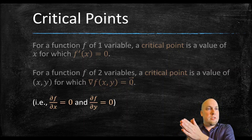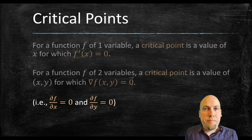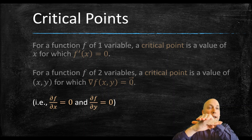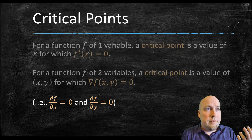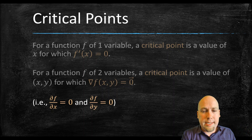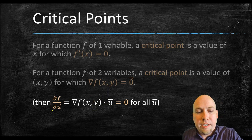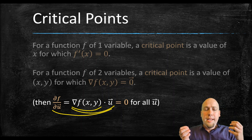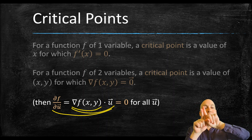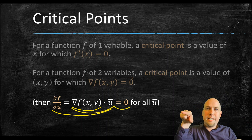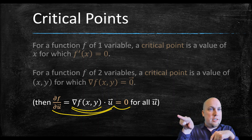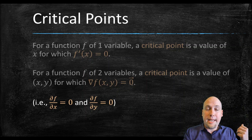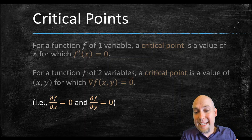In other words, we need the x partial derivative to equal zero and the y partial derivative to equal zero. Geometrically, this means the graph is flat and horizontal in the x direction and also flat or horizontal in the y direction. Importantly, if you think about directional derivatives — every directional derivative is just the gradient dotted with the direction vector. If the gradient equals zero, then this dot product always equals zero, so every directional derivative equals zero. It's flat in every direction. For computation, it suffices just to check the x and y directions; that gets you all of the other directions for free.